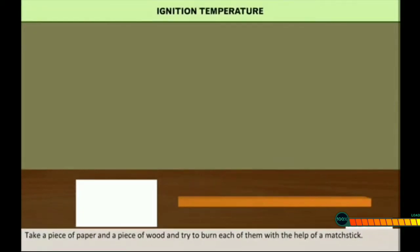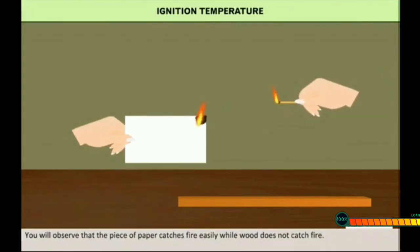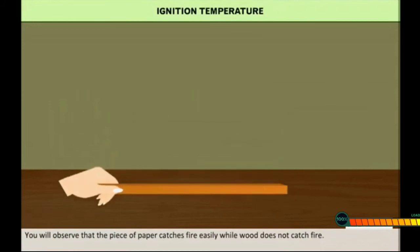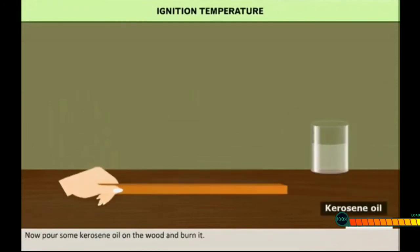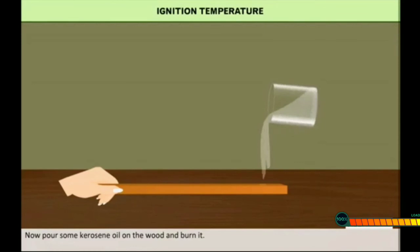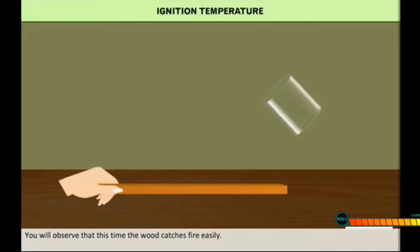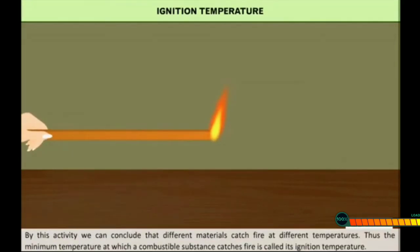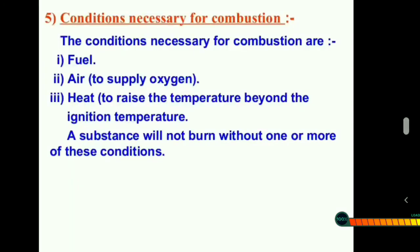Our next activity is to understand ignition temperature. Take a piece of paper and a piece of wood and try to burn each with the help of a matchstick. You will observe that the piece of paper catches fire easily while the wood does not. Now pour some kerosene oil on the wood and try to burn it — this time the wood catches fire easily. We can conclude that different materials catch fire at different temperatures.